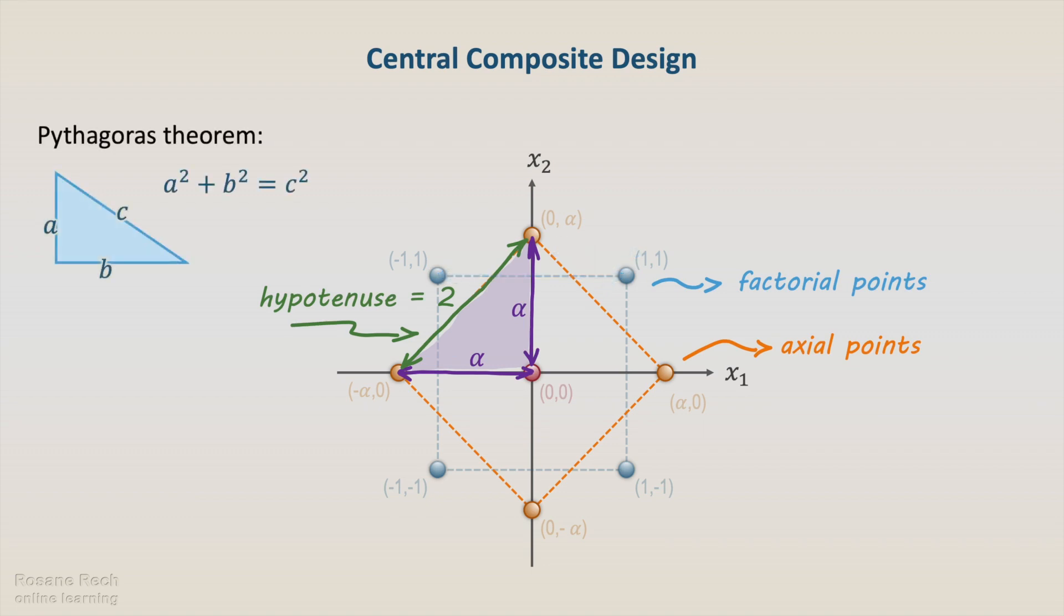Using the well-known Pythagoras theorem, we can determine the alpha value as the square root of 2, 1.414.